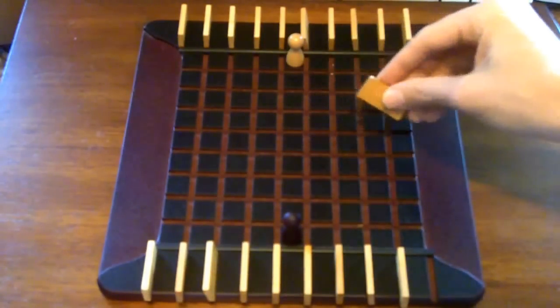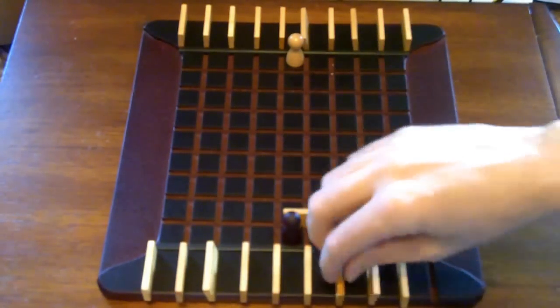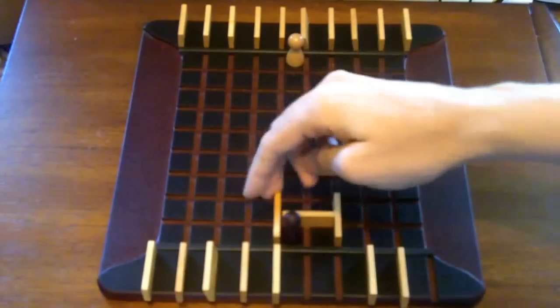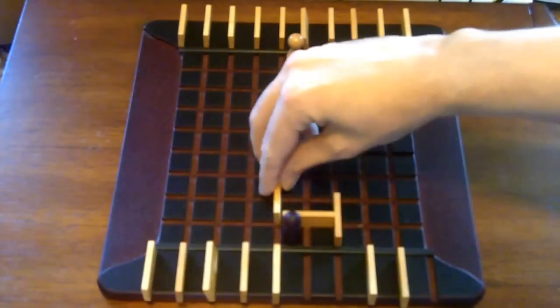The only other rule for placing walls is that you can't completely block off a player from being able to get to the other side. They must always have a path to victory. This would be illegal. This is okay.